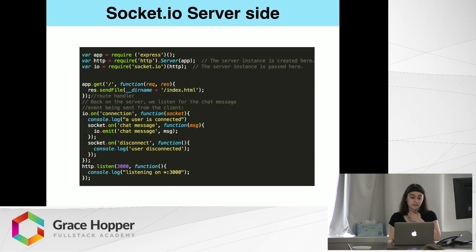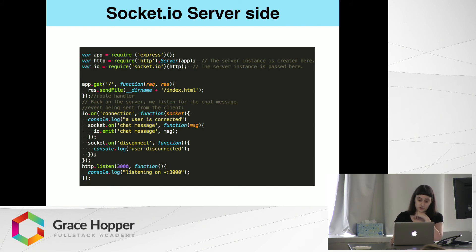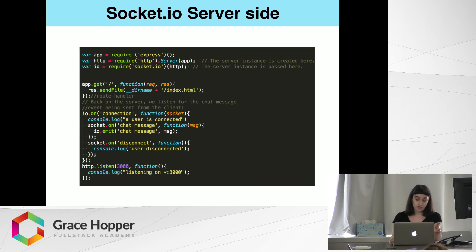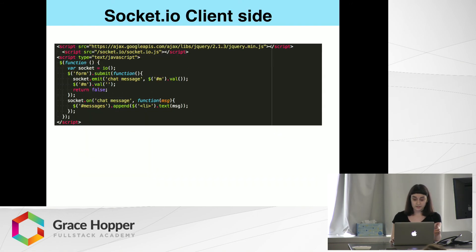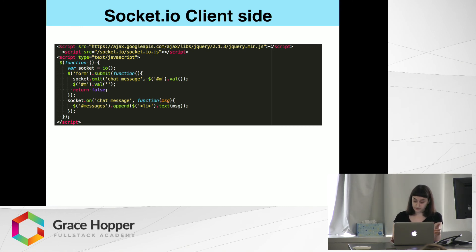This is an example of a chat application using Socket.io. On the server side, you make a server, then pass HTTP to Socket.io, and set your listeners for connection, disconnect, and for receiving messages. On the client side, you call an I/O function that connects to the server automatically — the server that hosts the page by default — and you also set event handlers to receive and send chat messages.